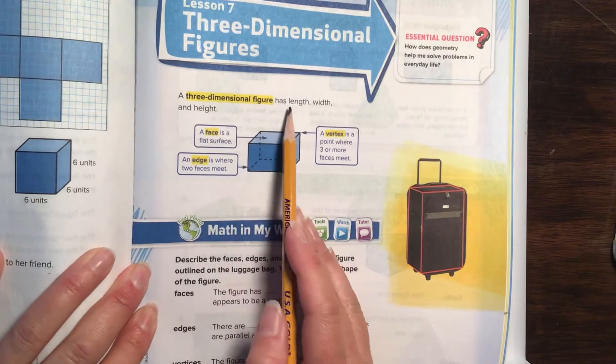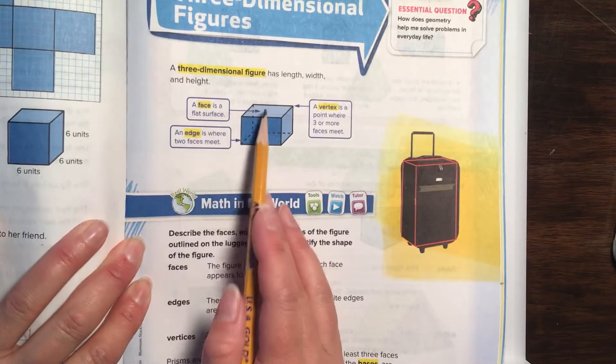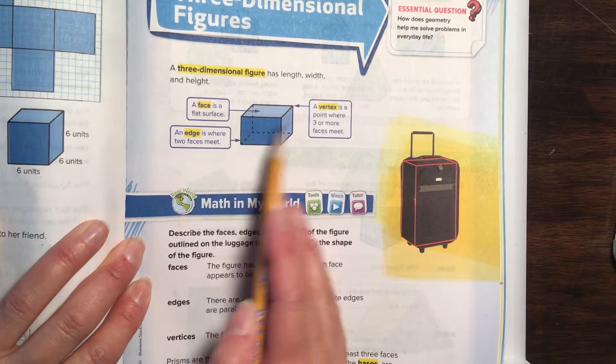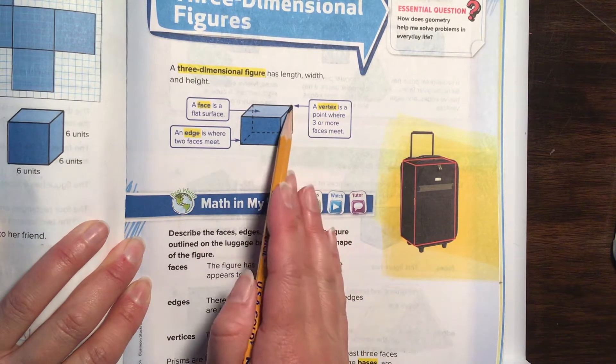A three-dimensional figure has length, width, and height. A face is a flat surface. An edge is where two faces meet, and a vertex is a point where three or more faces meet, or a corner.